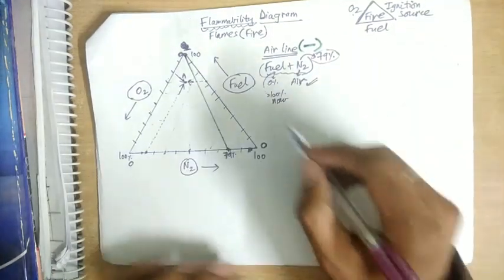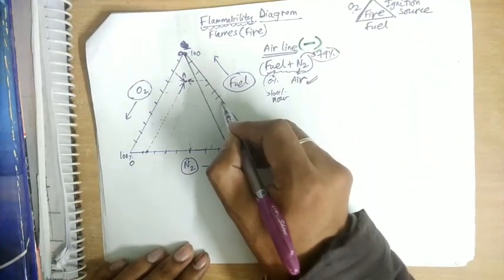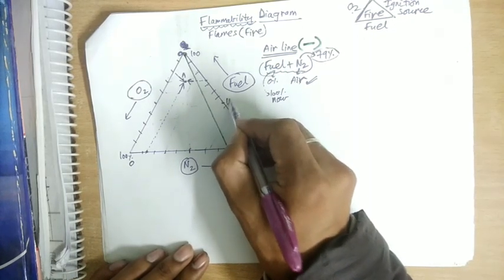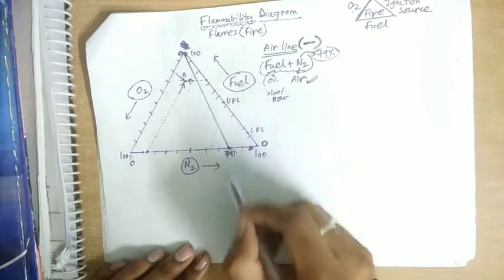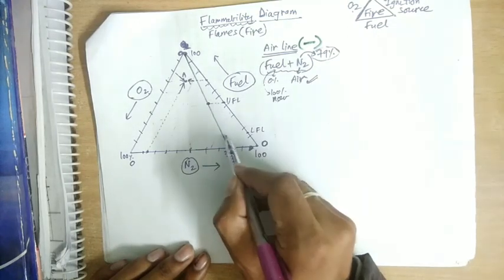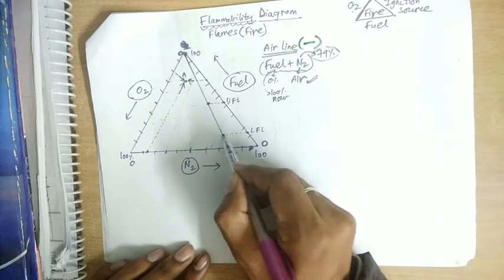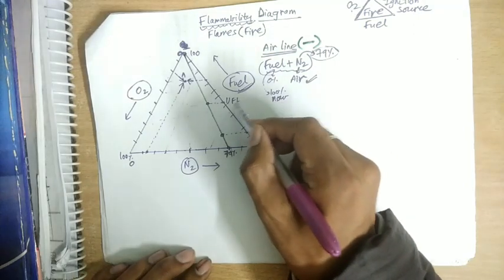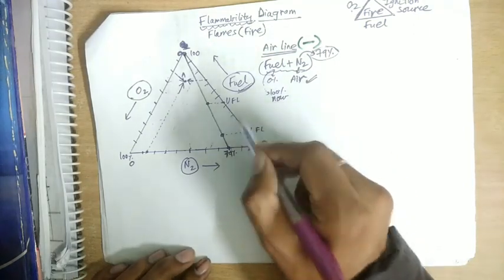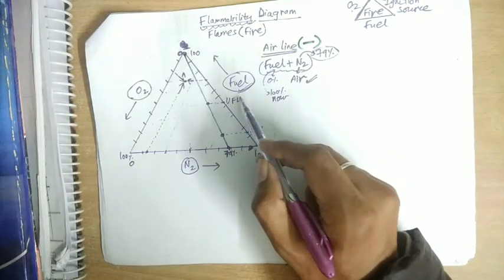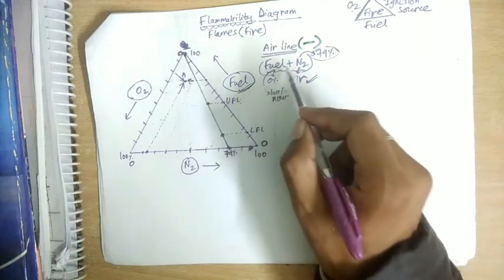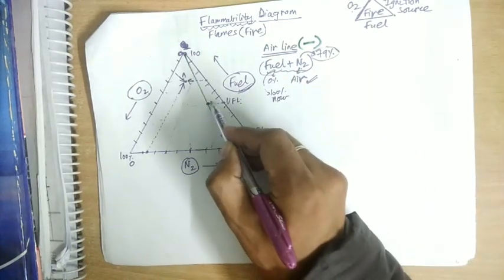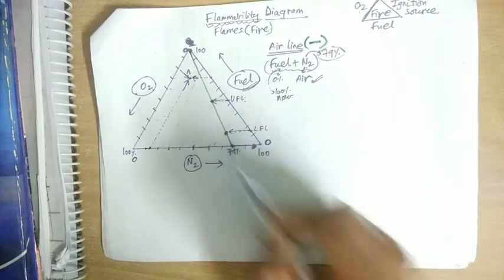Next we mark the UFL (upper flammability limit) and LFL (lower flammability limit) on the air line. These limits describe the fuel concentration in a fuel-plus-air mixture, so they are located along the air line. UFL is marked higher and LFL lower on the fuel axis, both extended to the air line.